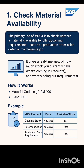For example, if you have 80 units in stock, a purchase order of 50 coming in, and a requirement of 100, MD04 will show your updated availability instantly. With MD04 you can plan smarter, avoid shortages, and keep your production and supply chain running smoothly.